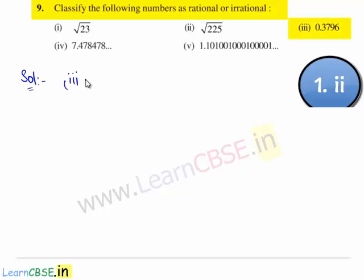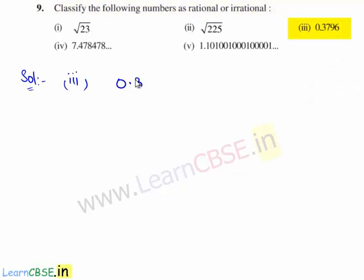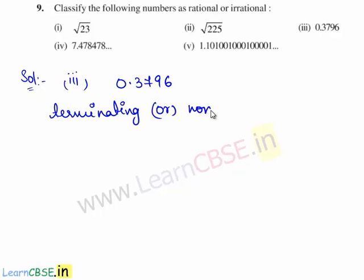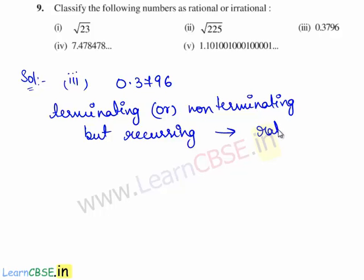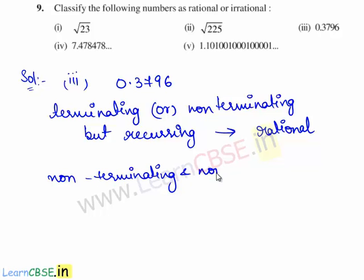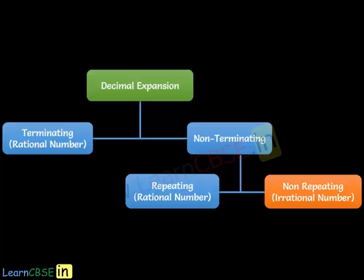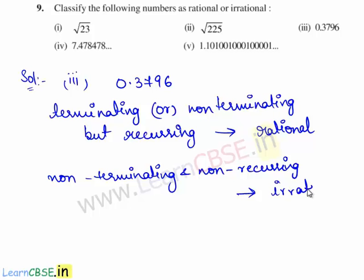Now let us move on to the third bit. We need to classify whether 0.3796 is rational or irrational. A number whose decimal expansion is terminating or non-terminating but recurring is a rational number. Here the decimal expansion 0.3796 is a terminating decimal expansion. Therefore, 0.3796 is a rational number.